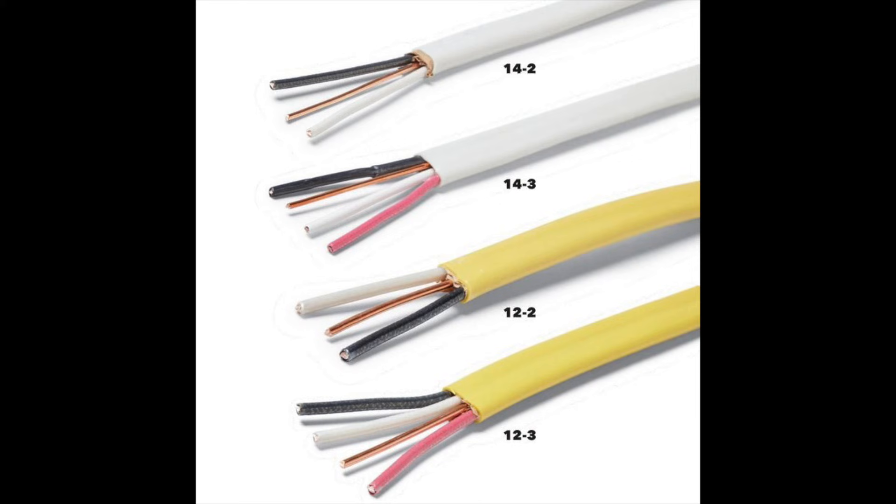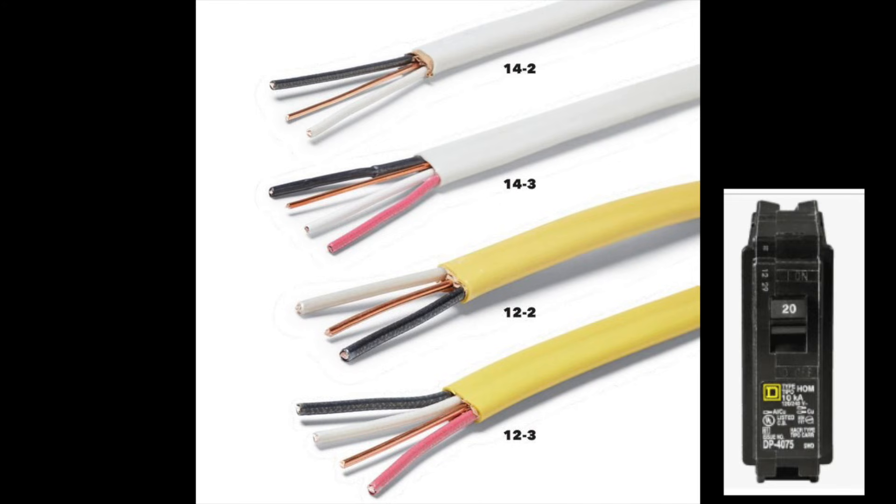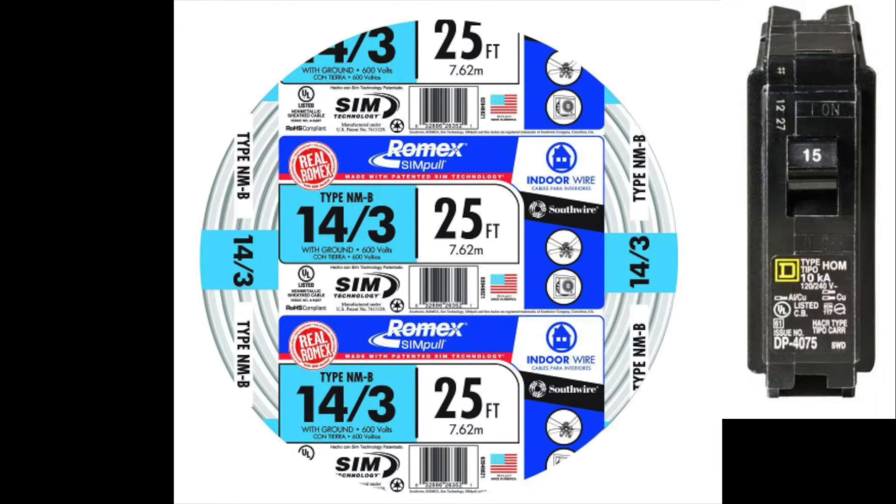Now, if for some reason you have yellow wire running up to your fan, you probably have a 20 amp circuit breaker, and you can get the 12.3 wire. But this heavier gauge is usually reserved for the kitchen or the garage where you're doing heavier things. So more likely than not, you have a 15 amp circuit, so the 14.3 wire should work perfect.